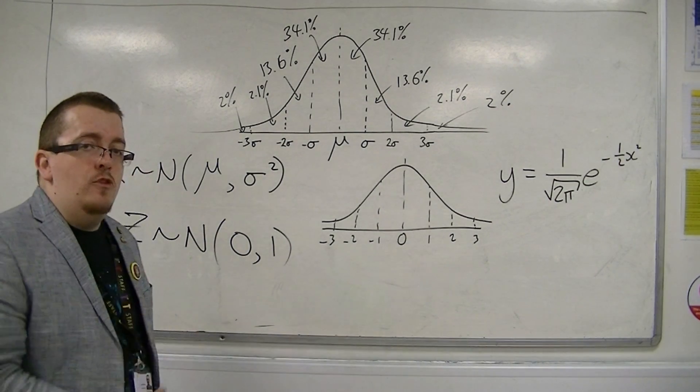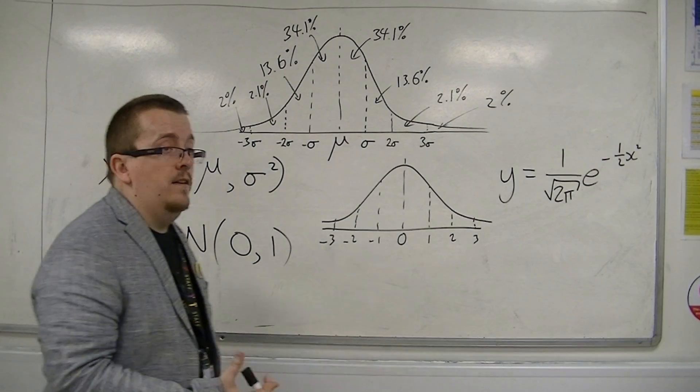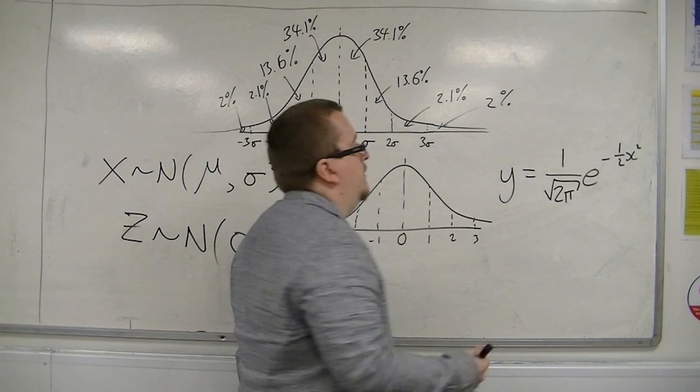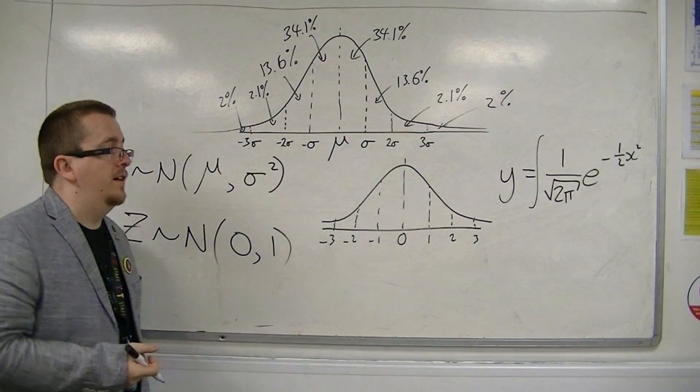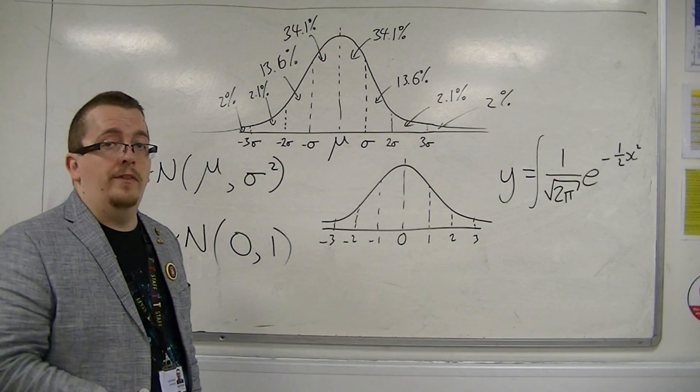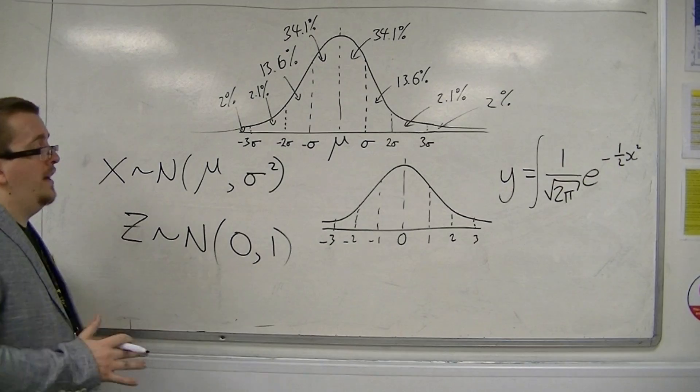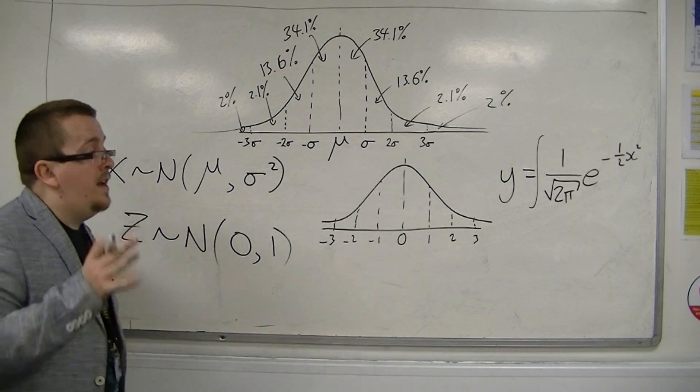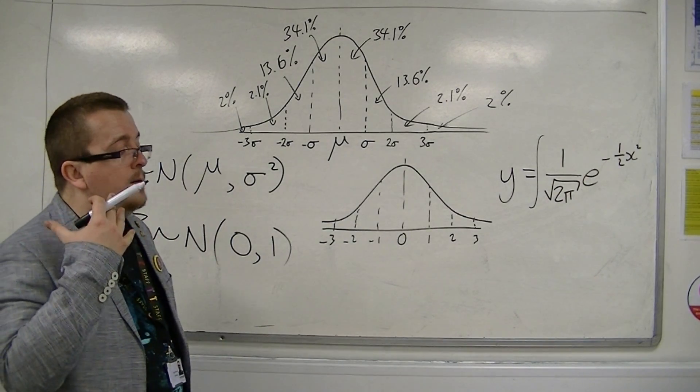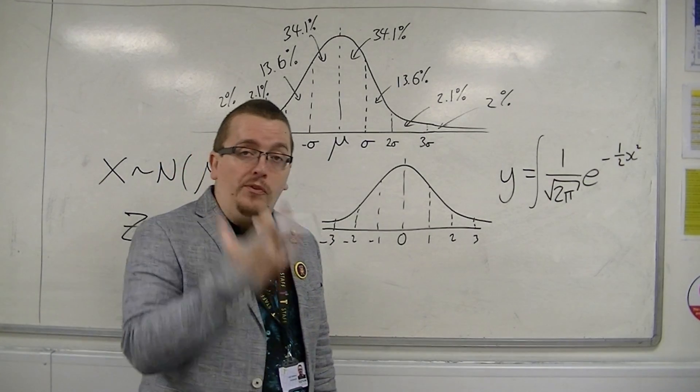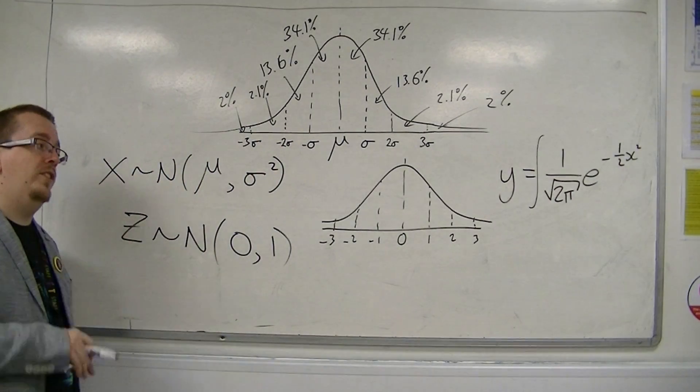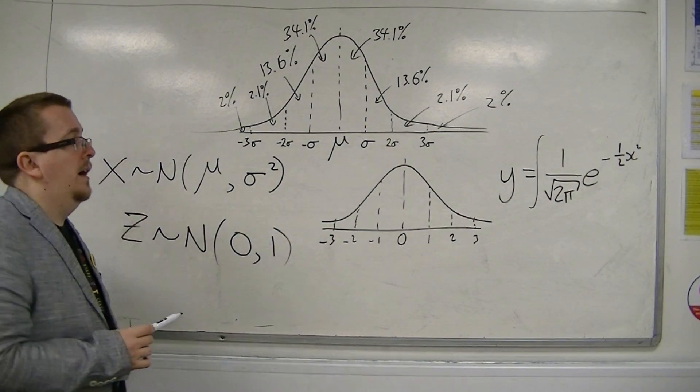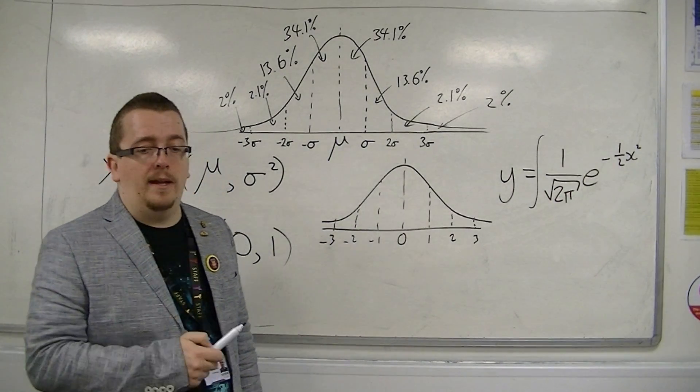If you wanted to find areas of this, you could integrate it, because integrating under the curve will allow you to find the probabilities. But thankfully, we don't have to do that. We either have the normal distribution tables that are in the back of the formula booklet, or we've got the TI-82 stats, which will allow us to solve these problems very quickly.